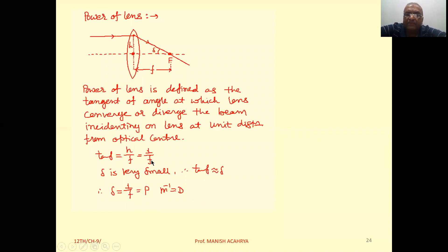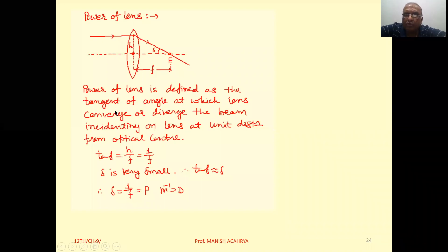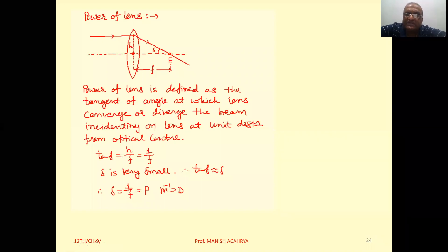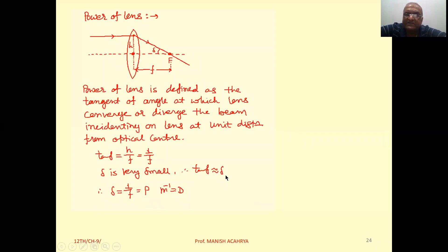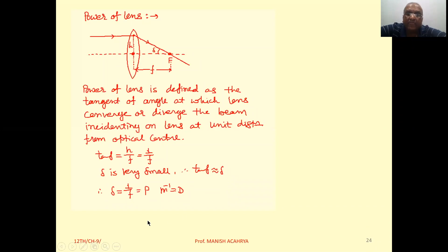But here we have to consider the rays which are very close to principal axis, means paraxial rays. Means this delta that will be very small. So we can write if delta is very small, then tan delta is nearly equal to delta. So we can write delta that is 1 upon f.